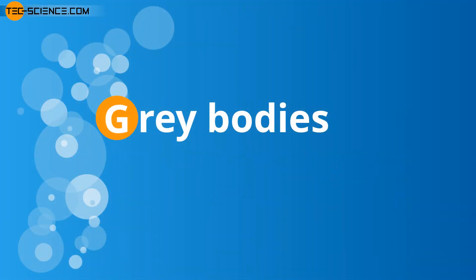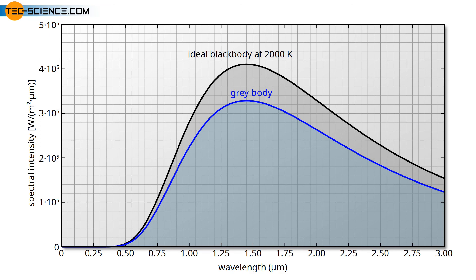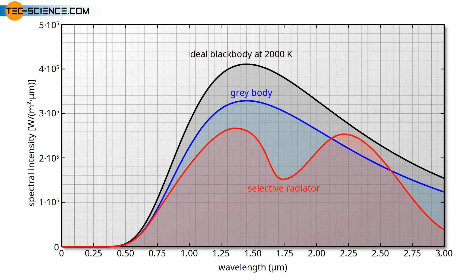The diagram shows the emitted wavelength spectrum of an ideal blackbody at a temperature of 2000 Kelvin. Real bodies, on the other hand, have a lower emission power. If this reduced power is independent of the wavelength, then such a radiator is also called a gray body. Gray bodies therefore have an absorptivity or emissivity that is constant over the entire wavelength spectrum. In this case, the curve of the spectral distribution is reduced by a constant factor. In some cases, however, a body will absorb or emit radiation to different degrees depending on the wavelength — the absorptivity or emissivity then depends on the wavelength. Such bodies are called selective absorbers or selective radiators.